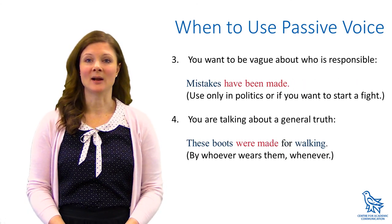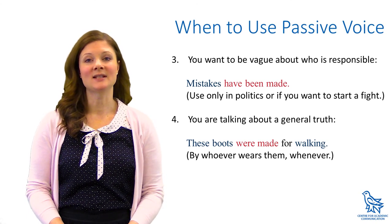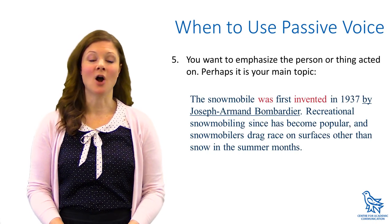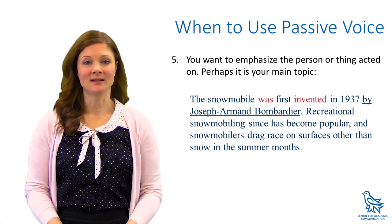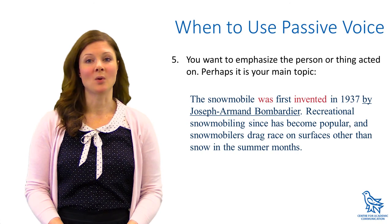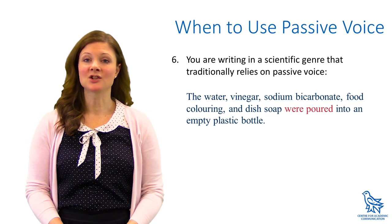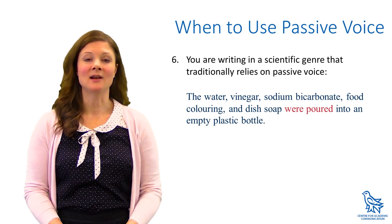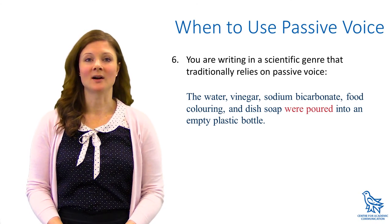You can also use passive voice if you want to be intentionally vague about who is responsible for an action, or if you're stating a general truth. Alternatively, you might wish to emphasize the object of the action rather than the subject, if the thing being acted upon is your main topic. Here, for example, the inventor needs to be credited, but he's not the most important thing about the topic. Finally, if you're writing in a scientific genre, you might actually be using passive voice quite a lot. It's often preferred in lab reports and research papers, where the important part is what actions were taken and what the results were.